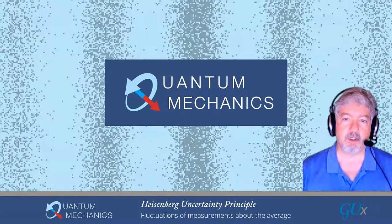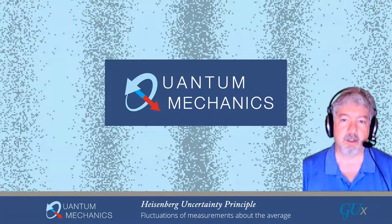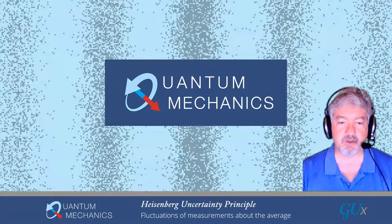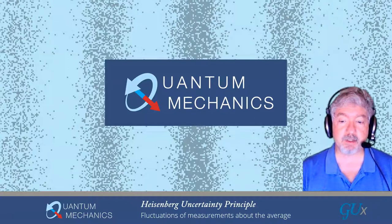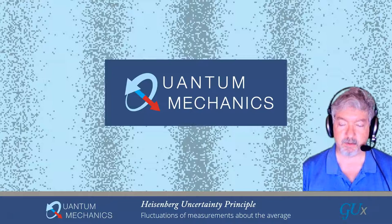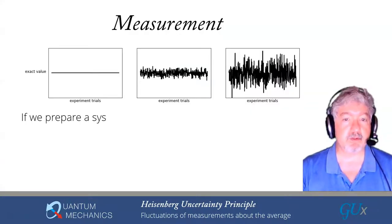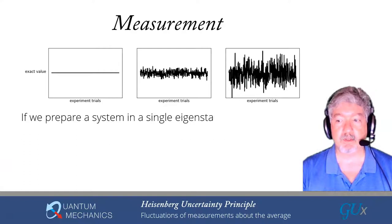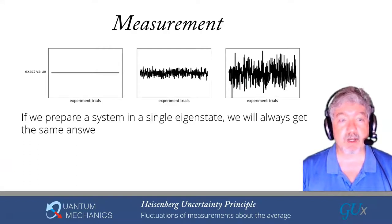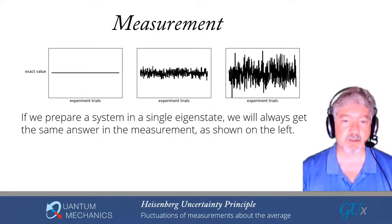Welcome to Module 6, Lecture 2. This is the Heisenberg Uncertainty Principle. We're going to show how fluctuations of measurements about the average tell us something interesting about the quantum state. I have for you three pictures of measurements showing what the results are averaged around the exact value and what the fluctuations are for different experimental trials.